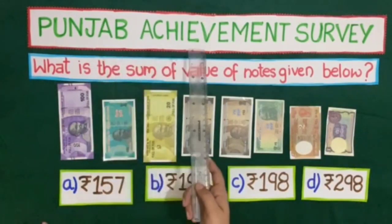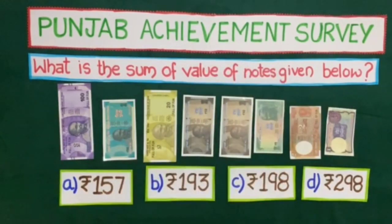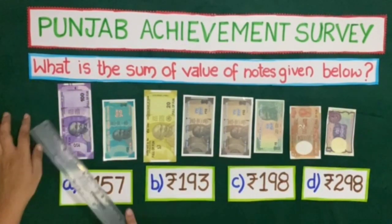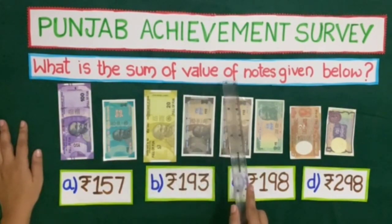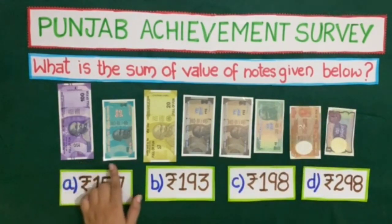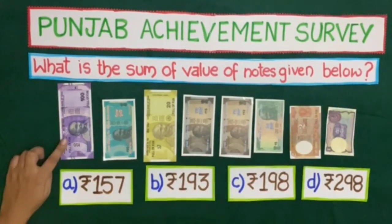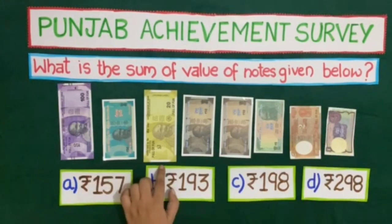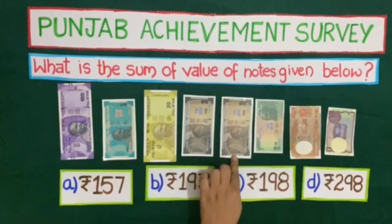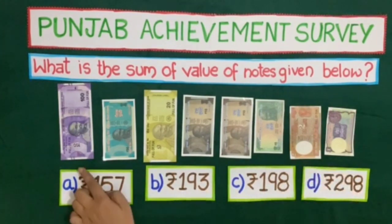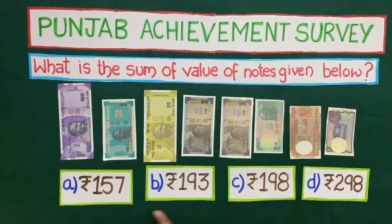Now you know that the Punjab Achievement Survey — PAS test — is conducted every weekend. We will solve one question of the Punjab Achievement Survey. The question is: what is the sum of value of notes given below? We have to find the sum and choose the correct answer from four options. Count with me: 100, 150, 170, 180, 190, 195, 197, and 198. So the total is rupees 198. The correct answer is C — rupees 198.